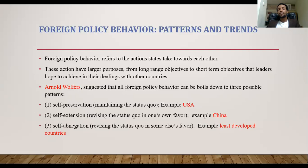The first pattern is self-preservation, which means working to maintain the status quo of the present international system. This is the pattern followed mostly by countries who like the present international relations system and work to preserve it. For example, the United States of America, who is the developer of the present international system, works to preserve the system and the status quo.